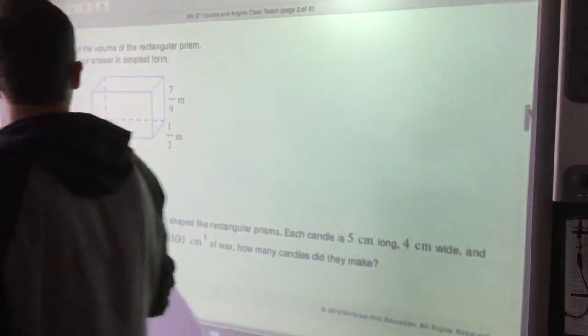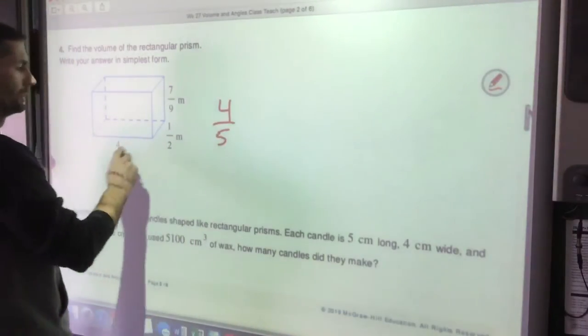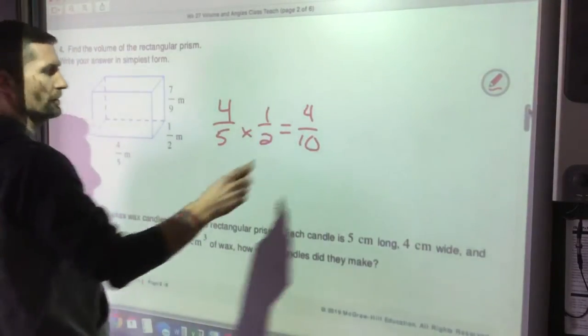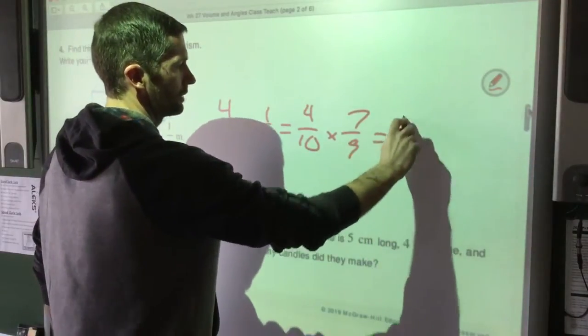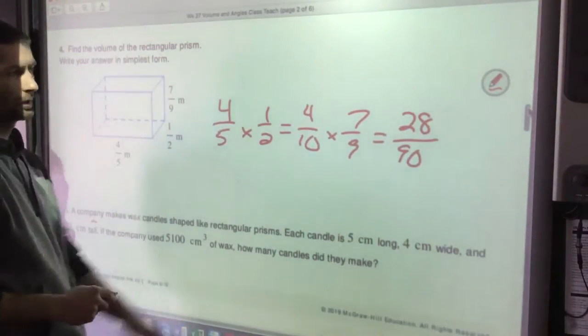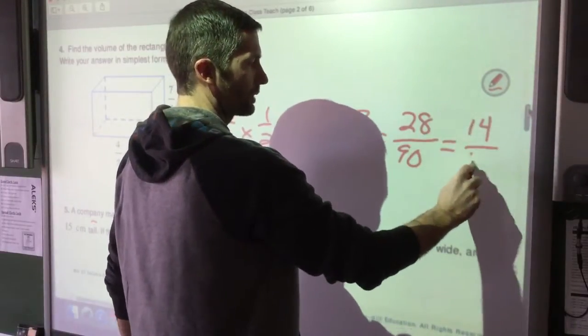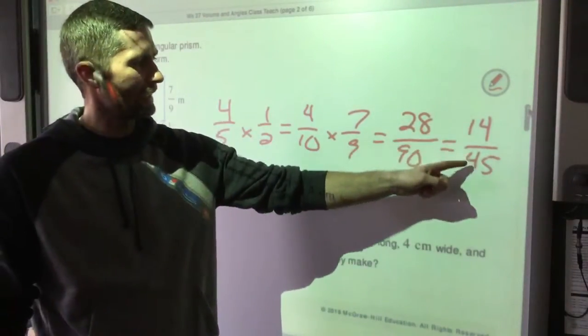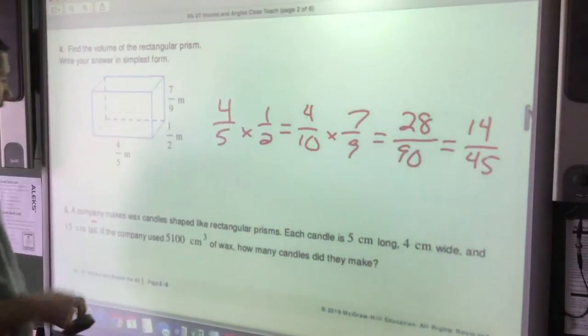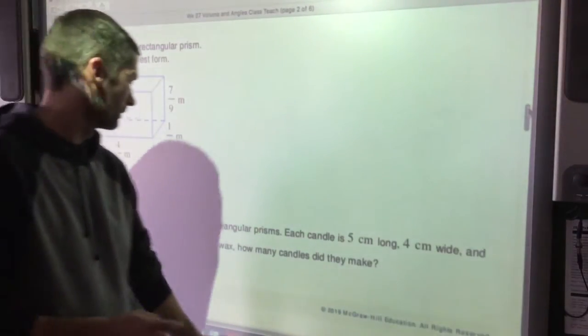Okay, find the volume of this rectangular prism. Write your answer in simplest form. So now we have my three dimensions. We can multiply them in any order. 4/5 times 1/2 is 4/10, and that times 7/9 is 28/90ths. Now I could have simplified first, made that a little easier, simplified back here. I'm just going to simplify at the end now. I know they're both even, so we can divide them both by two. So that's 14 over 45. I can't think of any numbers that go into both of these, they don't have a common factor. There's your answer, 14/45ths meters cubed.